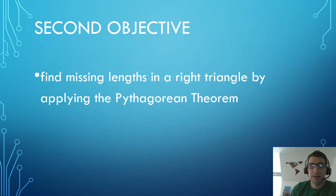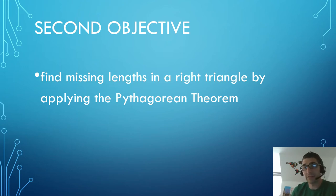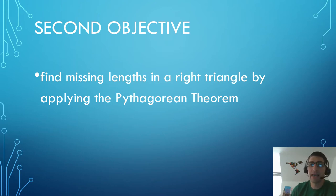Our second objective is to find the missing lengths in a right triangle by applying the Pythagorean theorem. So we just learned about why the Pythagorean theorem is true. Now we're going to talk a little bit more about what exactly it is, what it means, and how we can use it to help us solve some math problems.